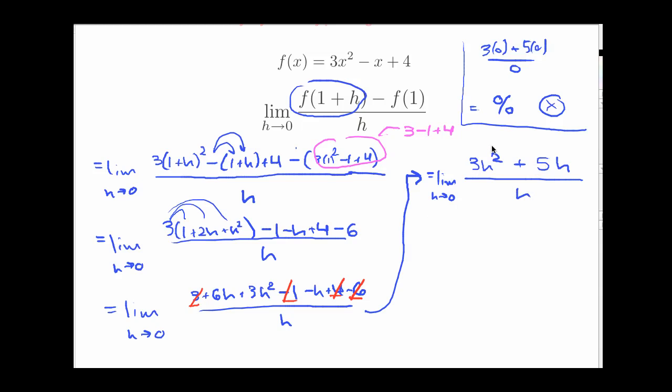Fortunately, that's going to be fairly simple because I see I have a common factor of h on the top of this fraction. So I'm going to factor that out like so and I get h times (3h + 5) all divided by h. And as usual with difference quotients, the h's cancel.